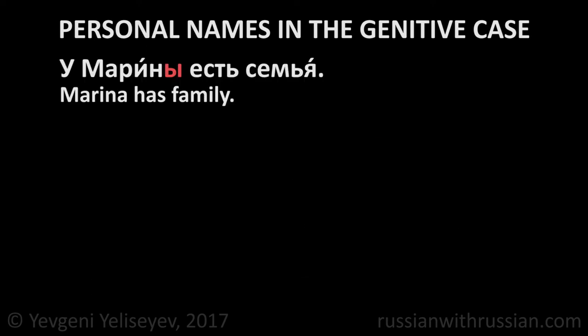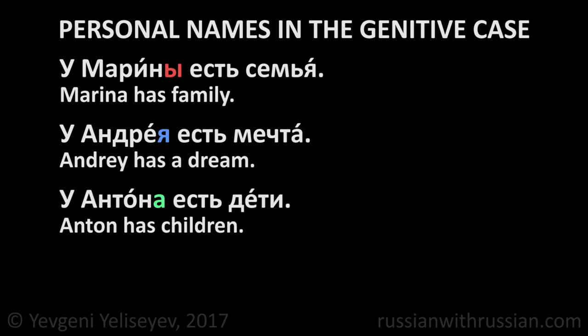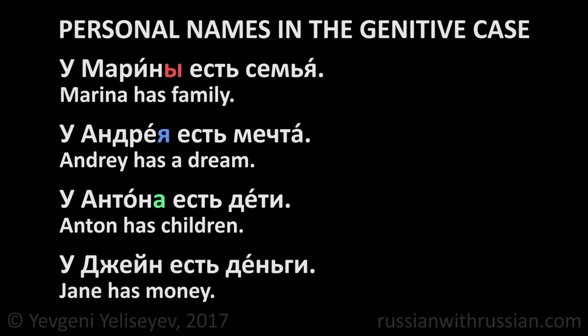Let's see some examples. У Марины есть семья — Marina has a family. У Андрея есть мечта — Andrey has a dream. У Антона есть дети — Anton has children. Anton is a male name, that's why we change its form. У Джейн есть деньги — Jane has money. Jane is a female name ending in a consonant, that's why we don't change its form.